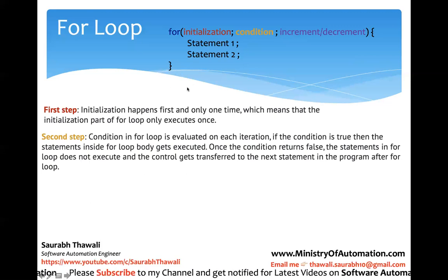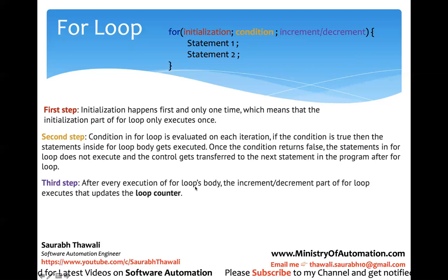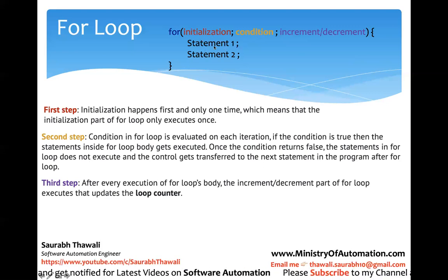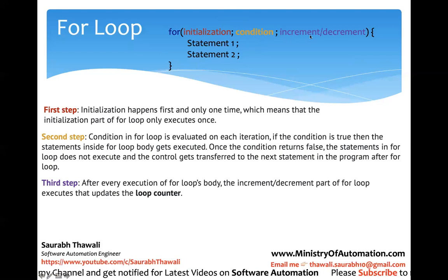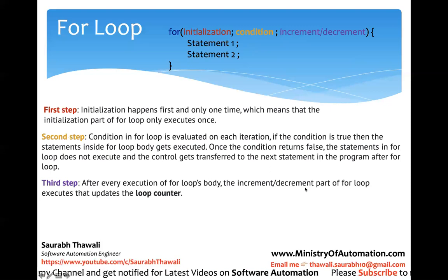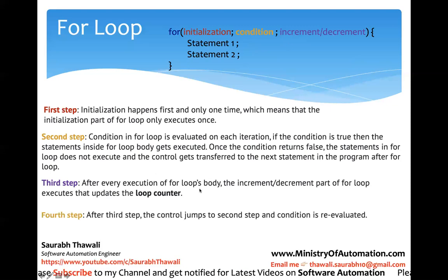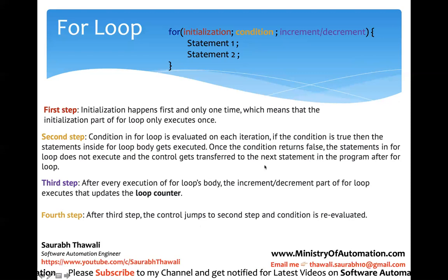When the condition is false, control gets transferred to the next statement in the program after the for loop — basically it comes out. The third step: after every execution of the for loop body — once it initialized, checked the condition, found it true, and executed statement one and statement two — it doesn't exit yet. Instead it goes back and increments the counter, then re-checks the condition. After the fourth step, control jumps back to the second step and the condition is re-evaluated. This is how the for loop works.